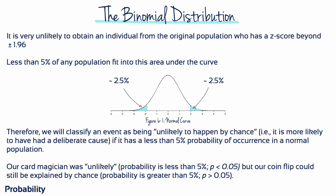It's very unlikely to obtain an individual from the original population who has a z-score beyond plus or minus 1.96. Less than 5% of any population fit into this area under the curve. Therefore, we classify an event as being unlikely to happen by chance — it's more likely to have had a deliberate cause if it has less than a 5% probability of occurring in a normal population. What the card magician did in example 10 was very unlikely — the probability was less than 5%. But the coin flip from example 9 can still be explained by chance, as the probability is greater than 5%.